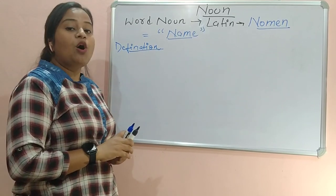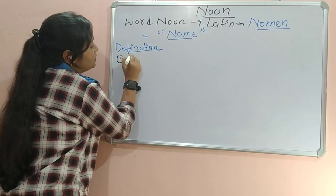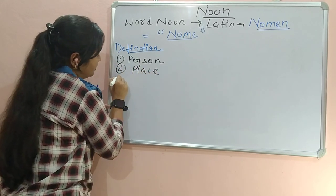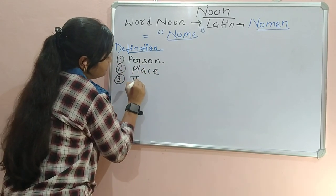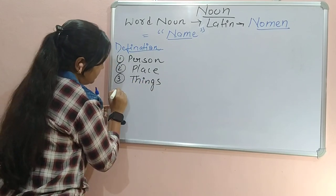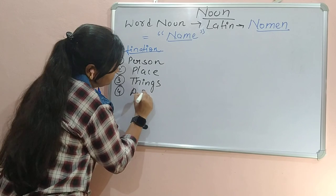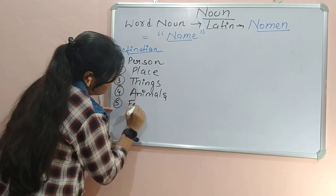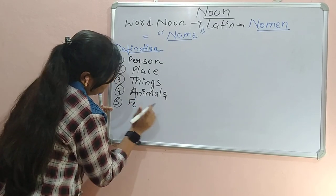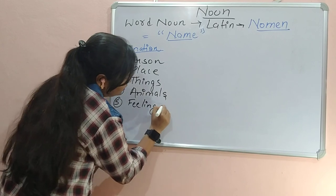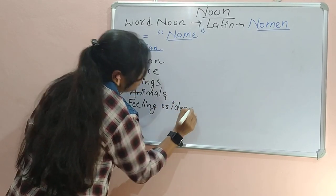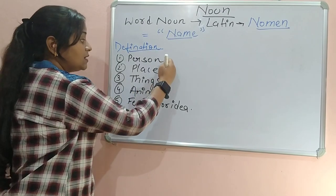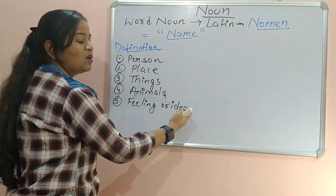Noun is the name of a person, place, thing, animal, feeling, or idea.